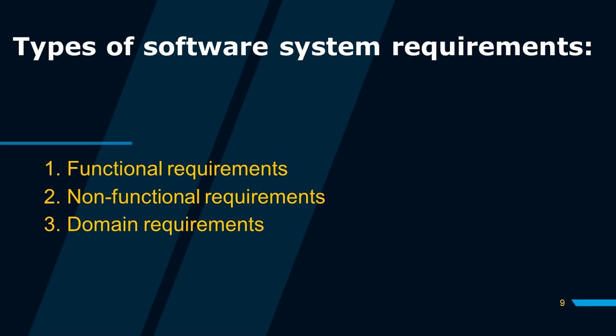Non-functional requirements represent constraints on the system and its functionality — performance constraints, compliance with standards, and constraints on the development process are some examples. Many apply to the system as a whole. Non-functional requirements are more critical than individual functional requirements and are more difficult to verify. Types include product requirements, organizational requirements, and external requirements.